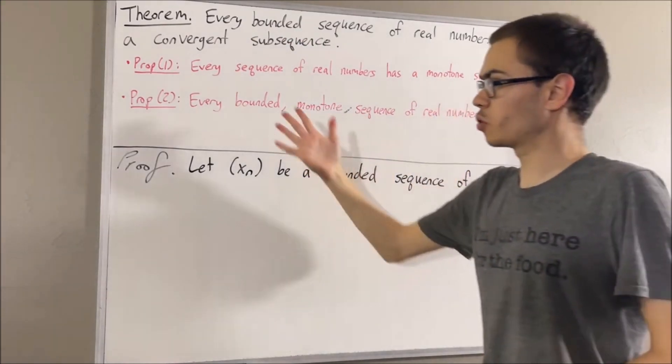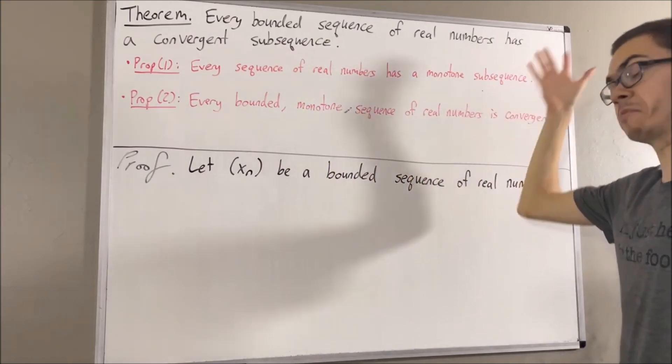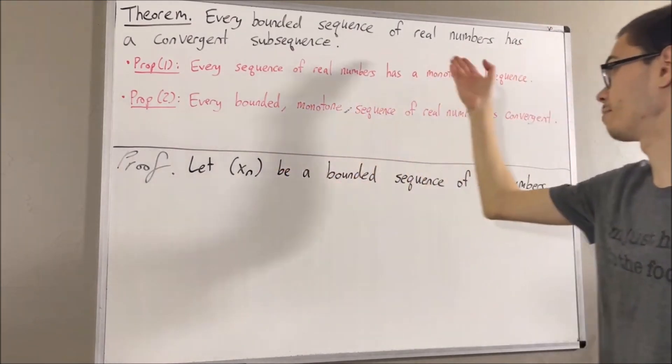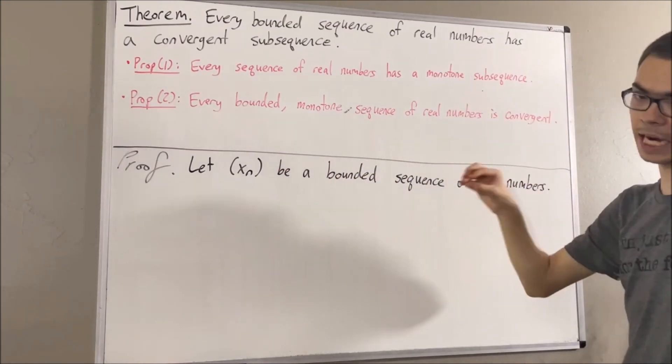To start out, since we know that every sequence of real numbers has a monotone subsequence, then in particular xn must have a monotone subsequence. I'll call that subsequence xnk.